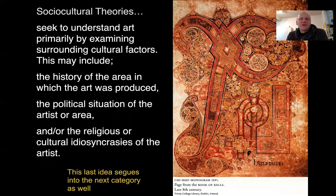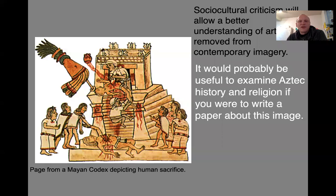Sociocultural theory seeks to understand art primarily by examining the surrounding cultural factors — the history of the area in which the art was produced, the political situation of the artist, or the religious and cultural idiosyncrasies. This was more like when we looked at the Van Eyck painting. It's probably useful to examine Aztec history and religion if you were to write a paper about this image — notably this is falsely labeled a Mayan Codex; it's actually an Aztec image. We're more likely to spend time looking at content in cultural context rather than formal qualities.